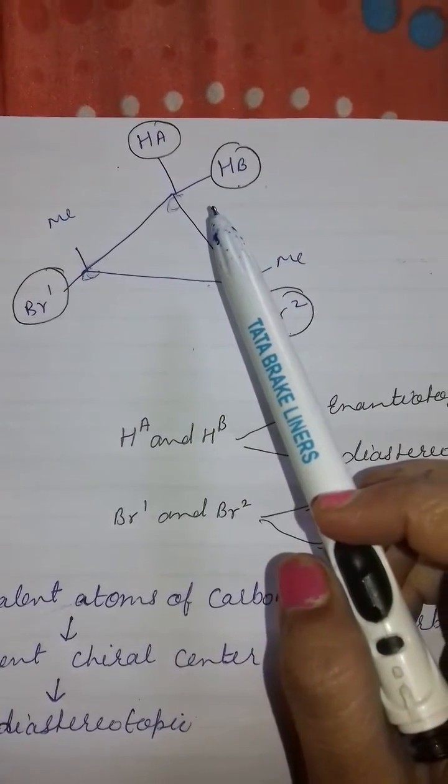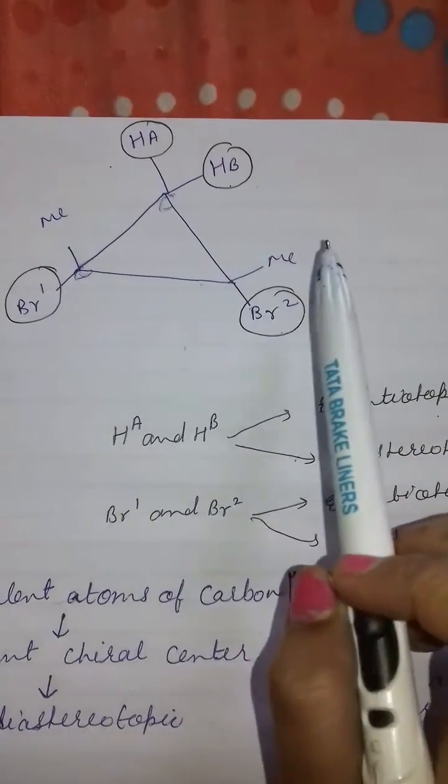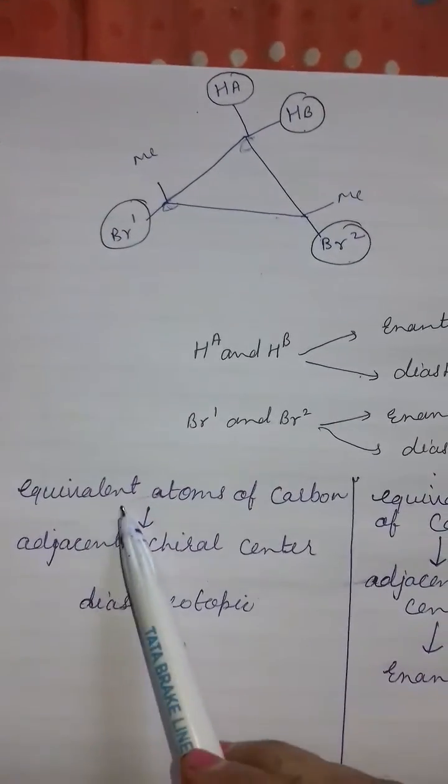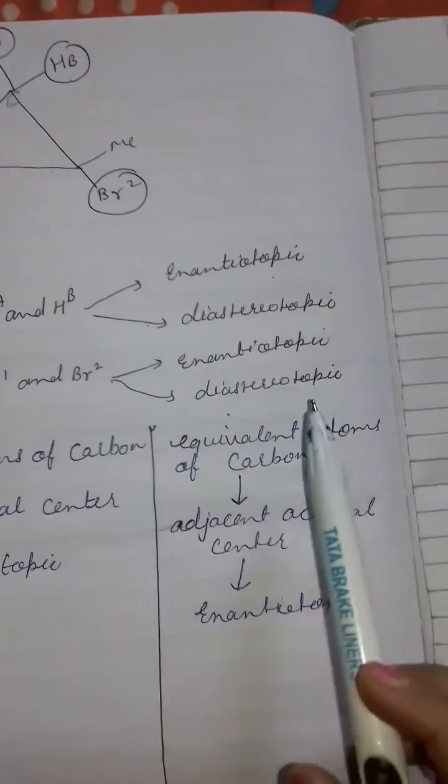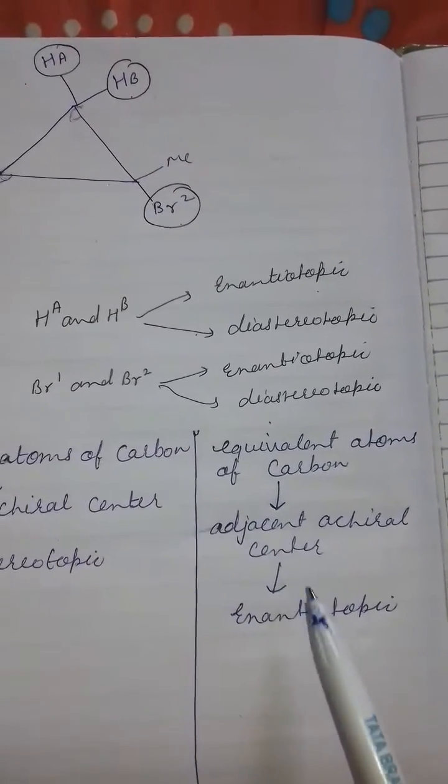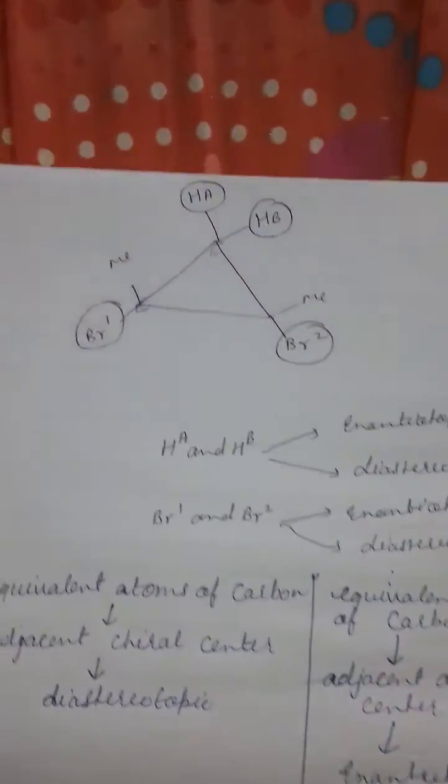If equivalent atoms of carbon has adjacent chiral centers then it will be diastereotopic. As written here. If equivalent atoms of carbon has adjacent achiral center then it will be enantiotopic. To solve this problem we should see this carbon.